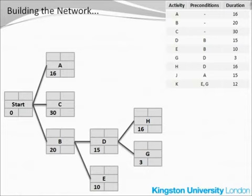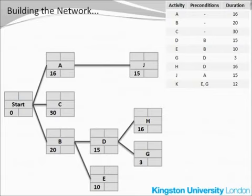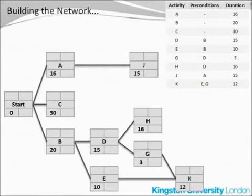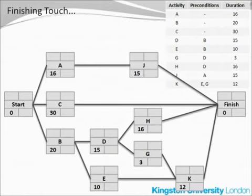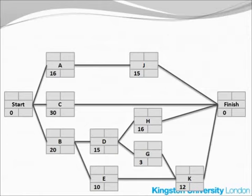Next in the line is activity J, which follows after A. Finally, activity K is a little bit more complex because it has two preconditions — activity E and activity G. We are almost finished, but we cannot leave any of the nodes without an outgoing line. So what we need now is a finishing node, which should follow every activity that is not connected yet. This is the activity network with all the activities in it, ready to start the calculations.